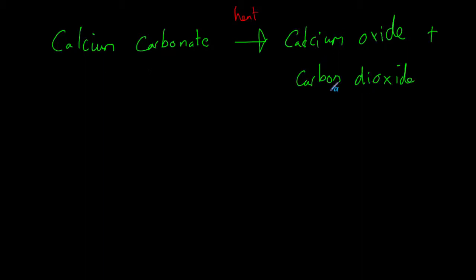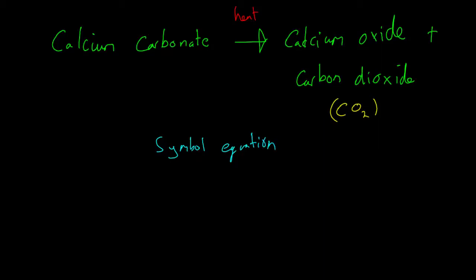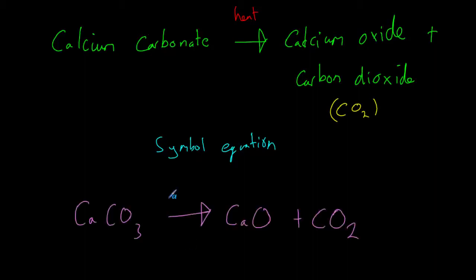Carbon dioxide — we should know that is CO₂ — but as you can see, there's only so much information we can take from a word equation, and that is why we use another form called the symbol equation. This is the symbol equation for the thermal decomposition of calcium carbonate, and it's way more useful. If we look at our reactant on the left hand side, we have calcium carbonate: one calcium atom, one carbon atom, and three oxygen atoms.